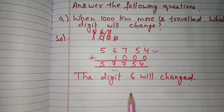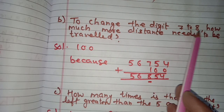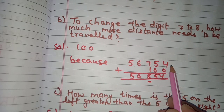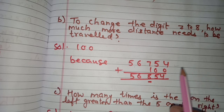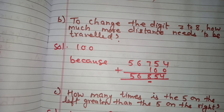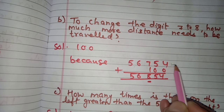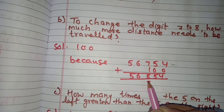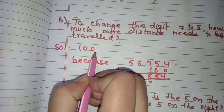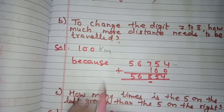Part b: to change the digit 7 to 8, how much more distance needs to be traveled? The meter reading is 56,754. If we add 100, the digit 7 will become 8 — it will become 56,854. So 100 kilometers more distance needs to be traveled.